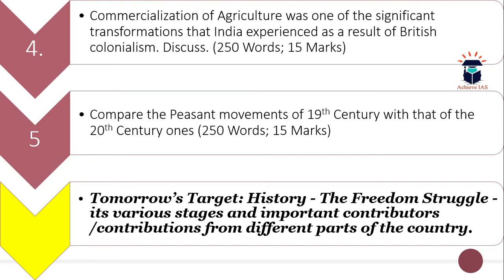The fifth question is: compare the peasant movements of the 19th century with those of the 20th century. Here you have to compare the peasant movements seen in the 19th century vis-à-vis the 20th century. The word limit here is also 250 and the maximum marks are 15.